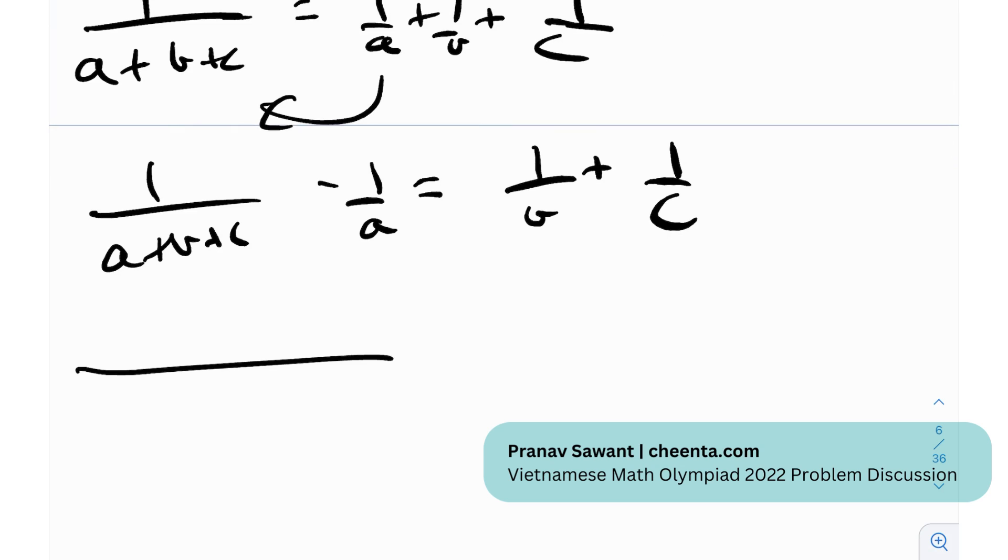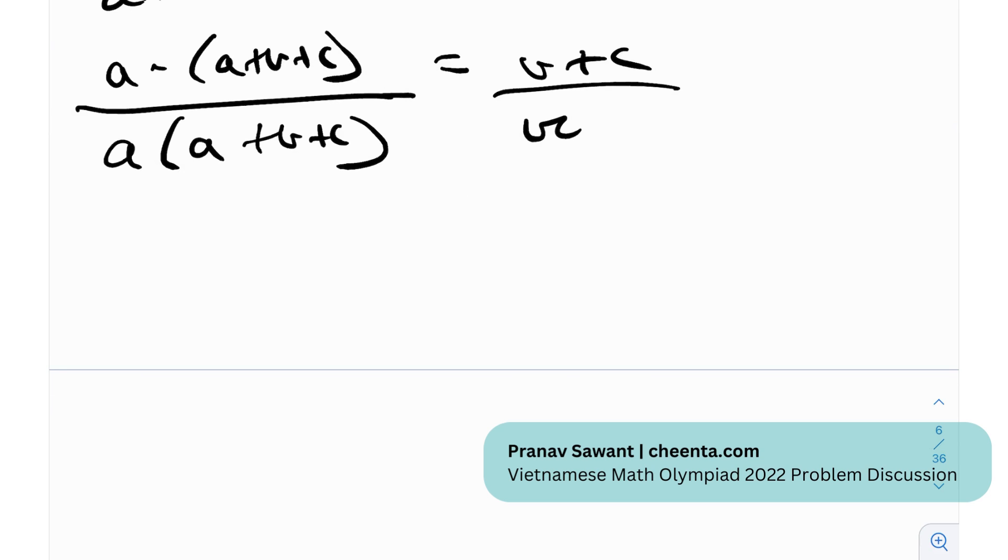And if I just take the LCM in the denominator, I'll get a times (a+b+c) in the denominator, and the numerator I'll get a minus (a+b+c), right? And over here I'll get (b+c) divided by bc.